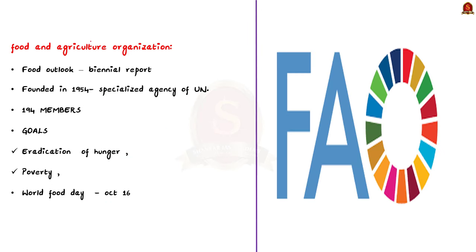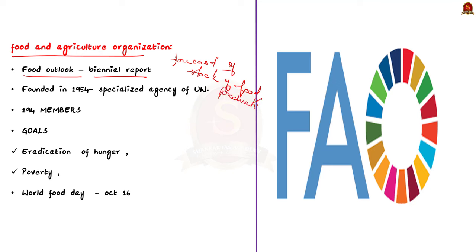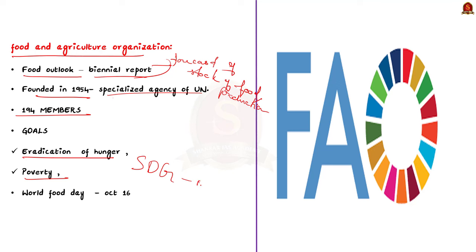Our next topic is the Food and Agricultural Organization. Recently FAO released the Food Outlook, a biannual report containing forecasts of production, trade, utilization, and stock levels across the world's major basic foodstuffs. FAO was founded in 1945 and is a specialized agency of the United Nations that leads international efforts to defeat hunger. It has its headquarters in Rome, Italy, and has 194 countries including India and the European Union as its members. Its major goals include eradicating hunger, food insecurity, malnutrition, and poverty, and striving for sustainable management and utilization of natural resources. World Food Day is celebrated on 16th October to mark the anniversary of the founding of FAO.